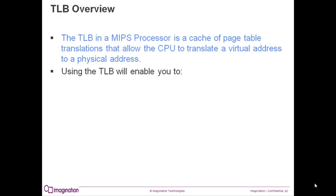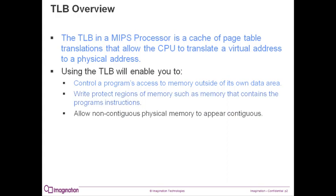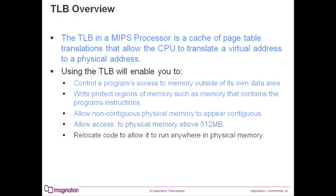Using the TLB will enable you to do several things. For the security-minded, the TLB allows the OS to control a process's memory access to its own data areas and not be able to read or write over other processes' memory. The TLB can also be used to prevent a process from overwriting its own instructions. It allows non-contiguous physical memory to appear as contiguous to a process. On MIPS processors, it allows programs to access physical memory above the first 512 MB. A process can be linked to run at a specific address, but be loaded and run from anywhere in physical memory.